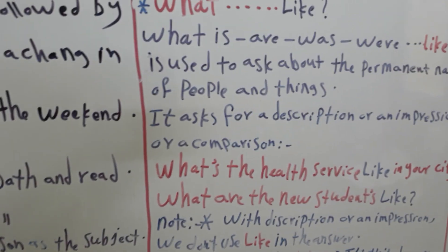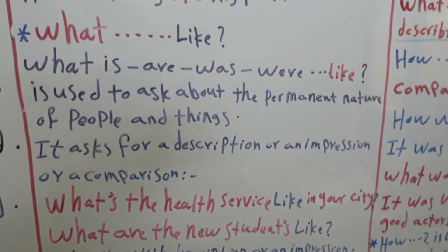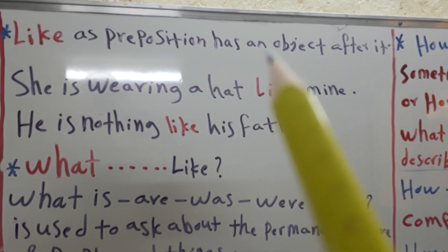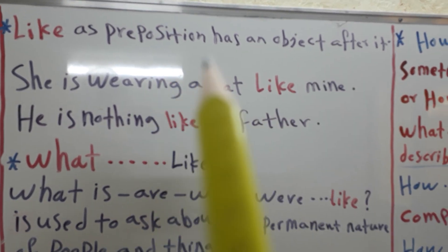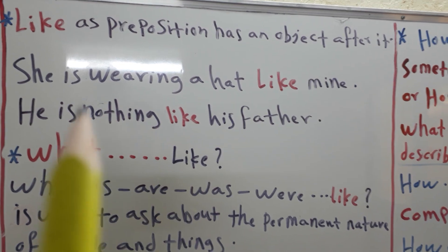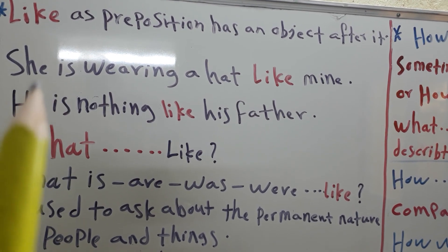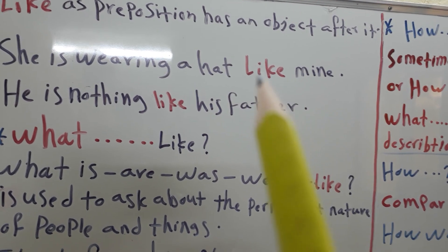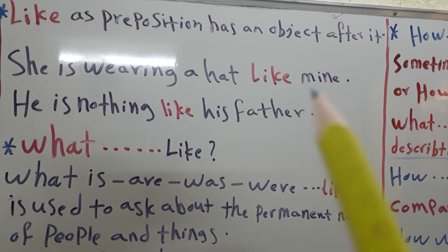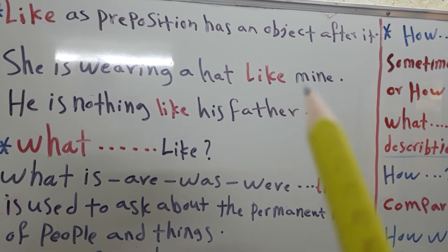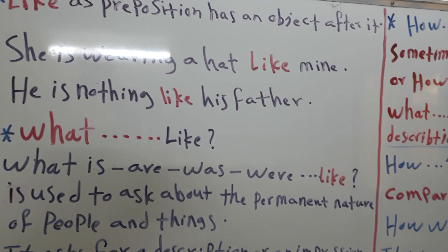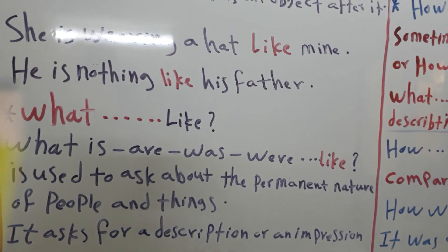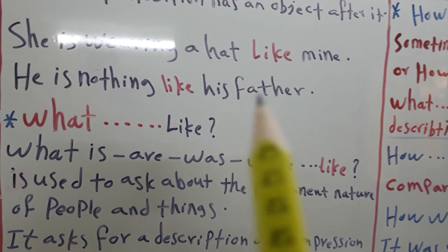Now I am going to speak about 'like' as a preposition, which has an object after it. We will see in this example: 'She is wearing a hat like mine.' After 'like', we use 'mine' as an object. Another example: 'He is nothing like his father.' Here, 'his father' is used as an object after 'like'.